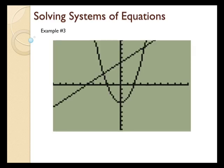Example number three is different — I see two graphs on that coordinate axis. I see y equals x squared minus 4, which is the parabola, that quadratic function. And then I see y equals x plus 5, which is the linear function. I'm going to look for where the graphs cross each other because there's more than one graph on the coordinate axis.